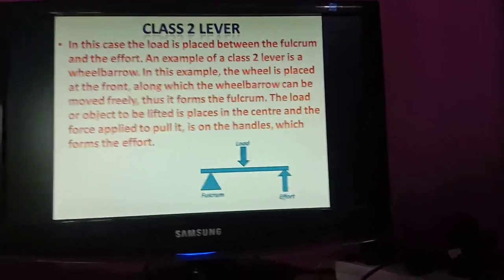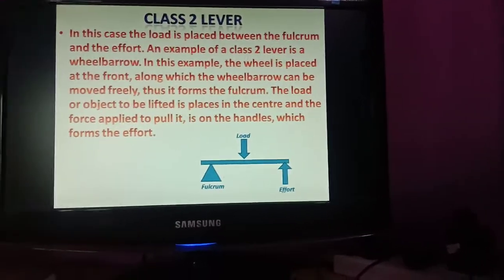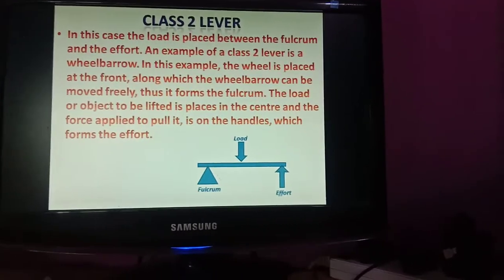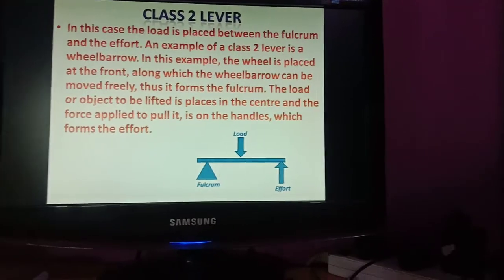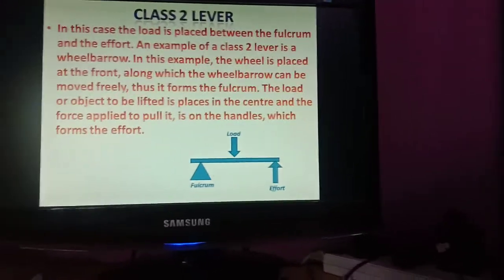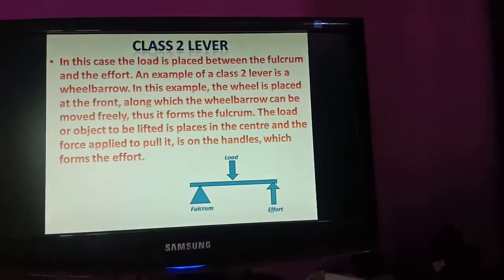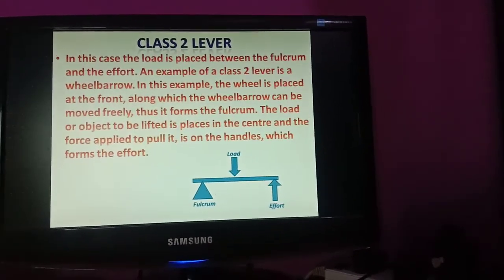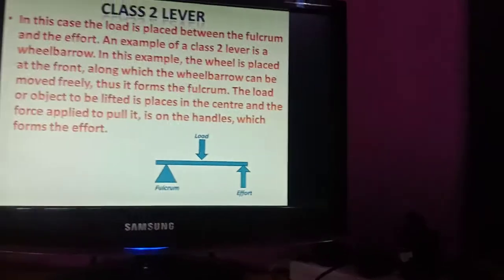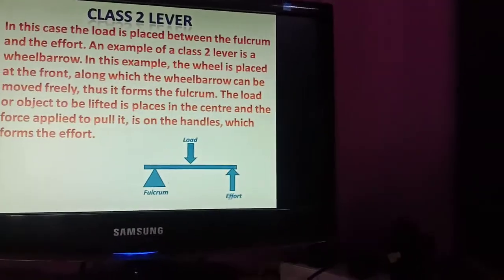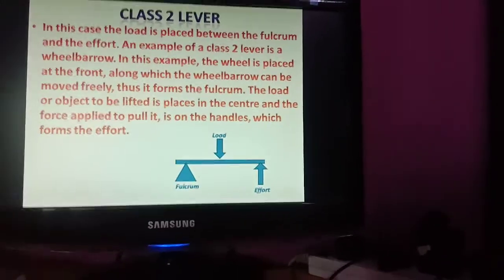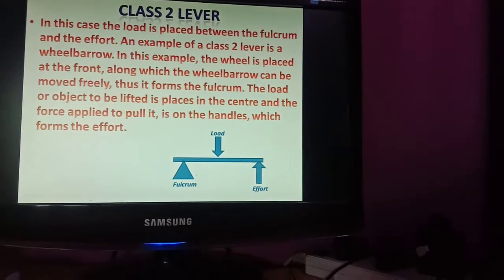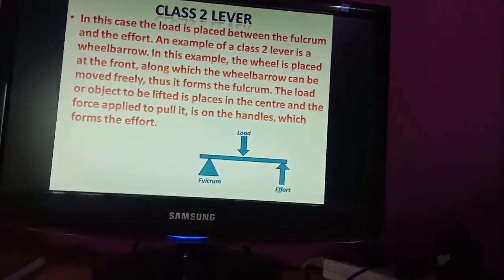In a wheelbarrow, the load or object to be lifted is placed in the center, and the force applied to pull is on the handles at the last end - that is called effort. So the fulcrum is at the front end, the load is in the middle, and the effort is at the last end where your hands are.